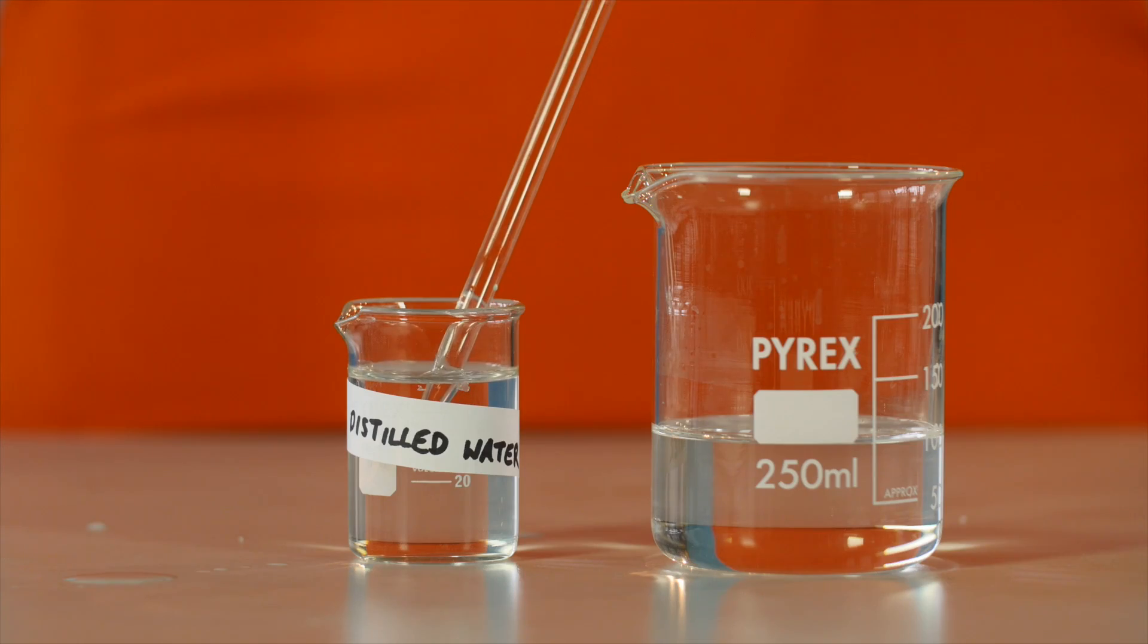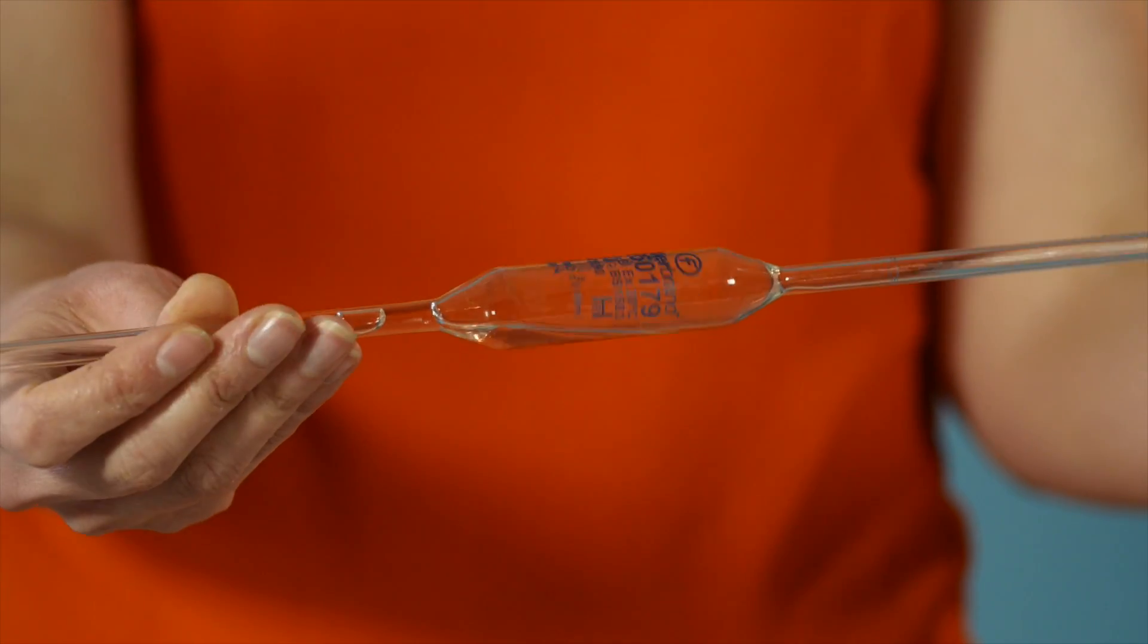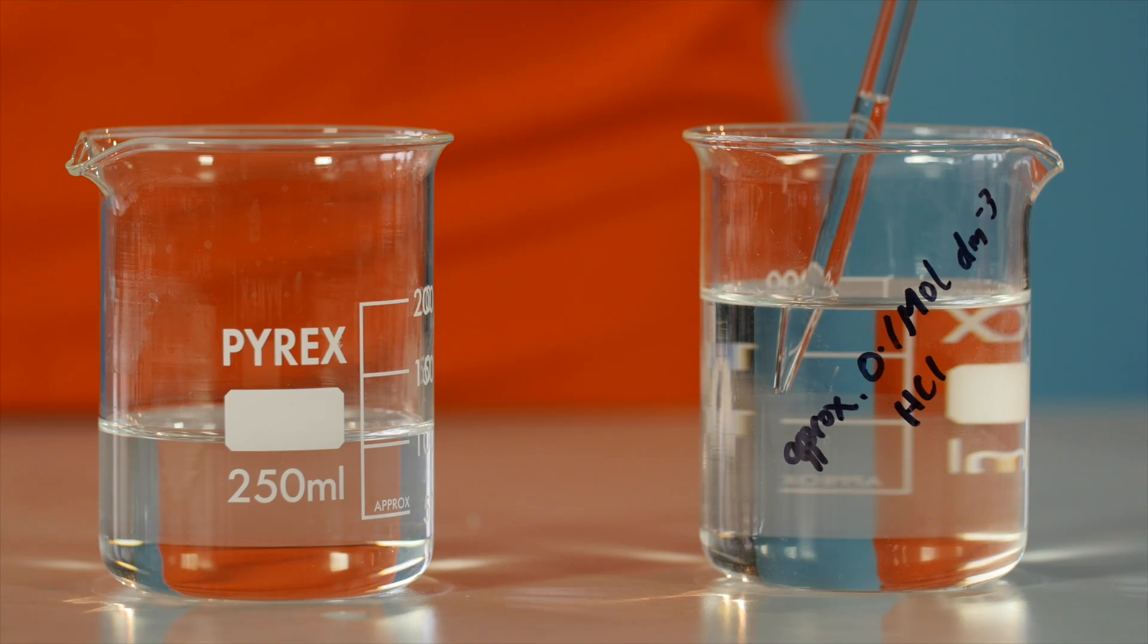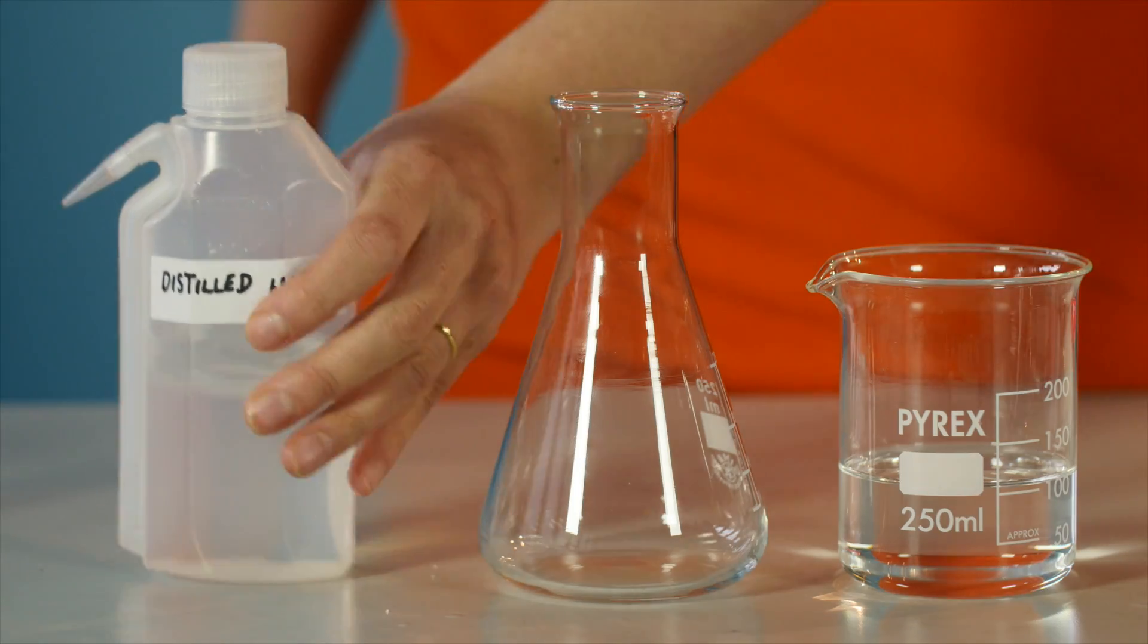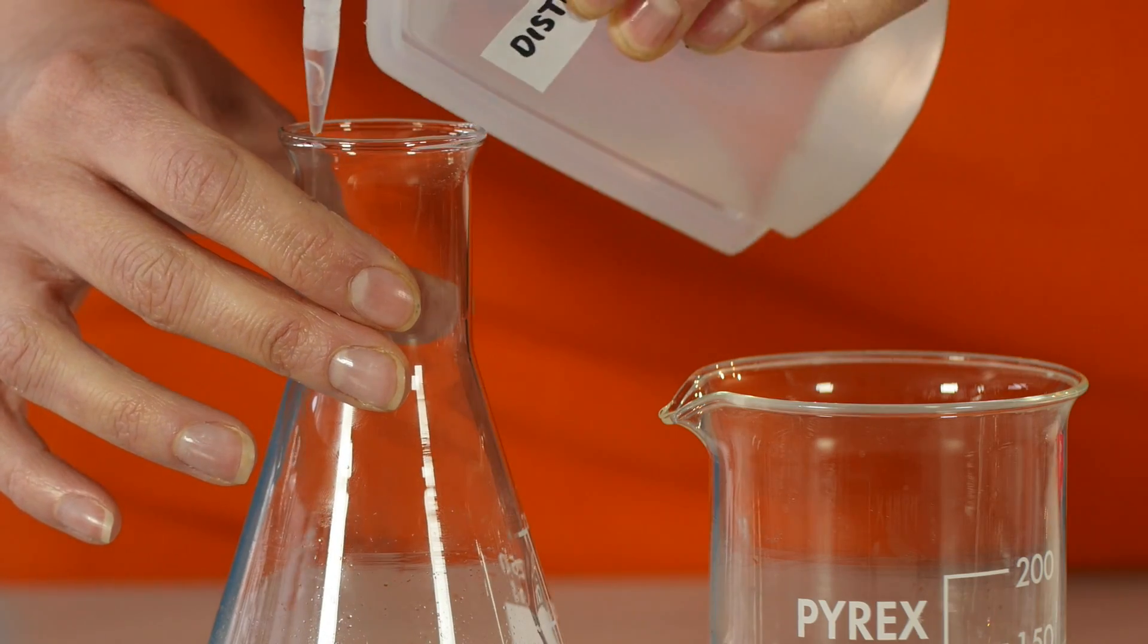Rinse the pipette with some distilled water, and then two or three times with some of the dilute hydrochloric acid solution. Rinse the conical flask with distilled water only.